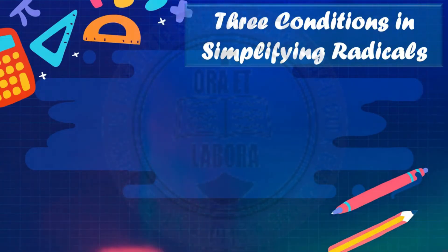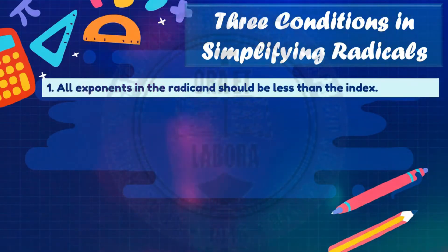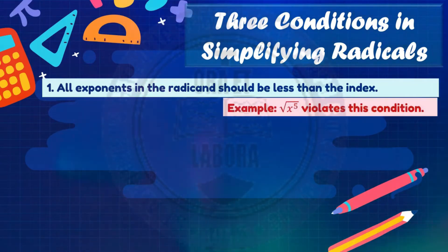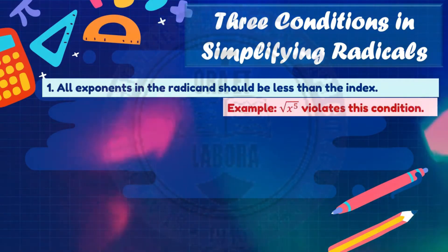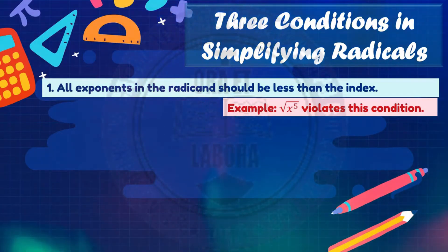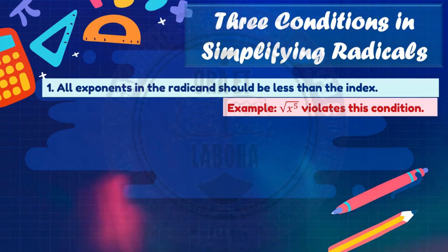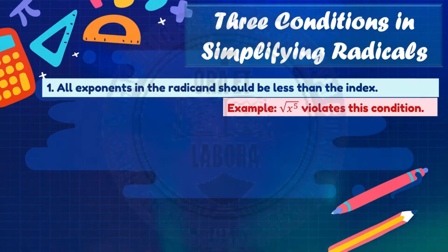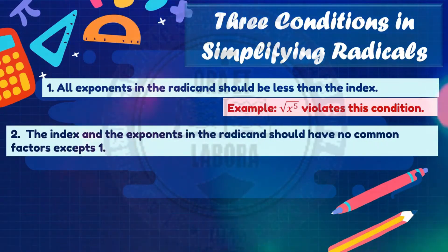Condition number one: all exponents in the radical should be less than the index. For example, square root of x raised to 5 — the index is 2 and the exponent is 5. Since 5 is greater than 2, the exponent of the radical is greater than the index, which means it violates the condition.